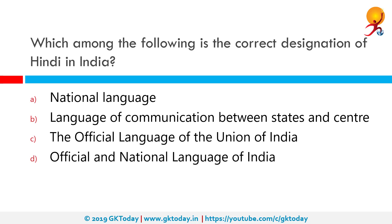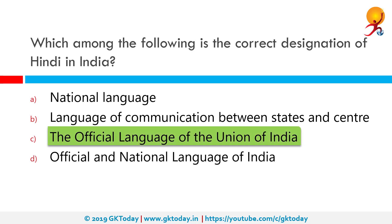Which among the following is the correct designation of Hindi in India? The correct answer is the official language of the Union of India. The Indian constitution in 1950 declared Hindi in Devanagari script to be the official language of the Union. Unless Parliament decided otherwise, the use of English for official purposes was supposed to cease 15 years after the constitution came into effect, i.e. on 26 January 1965.